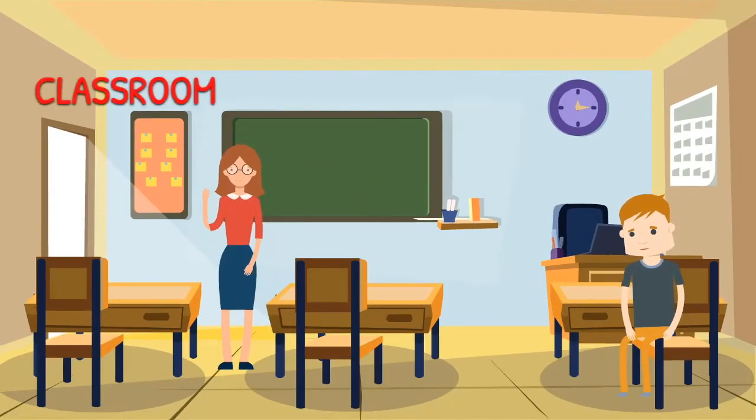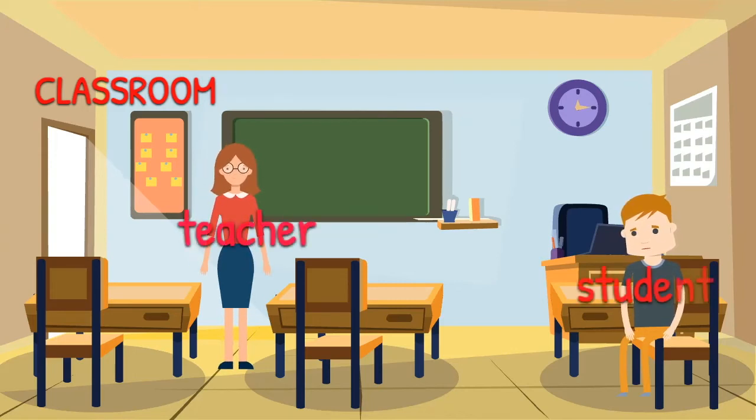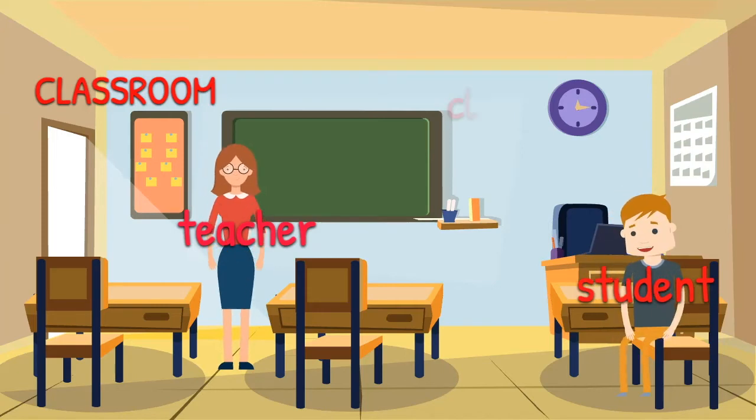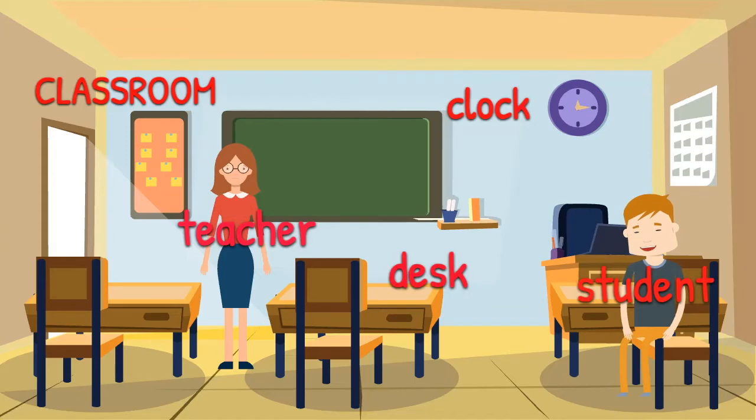We are in a classroom, which would be the place. The people here are the teacher and the student. Those are the people. The things here are the clock, the desk, and the chair, and also the board. Those are a few things that I can name as nouns in this picture.